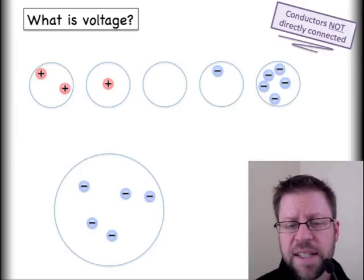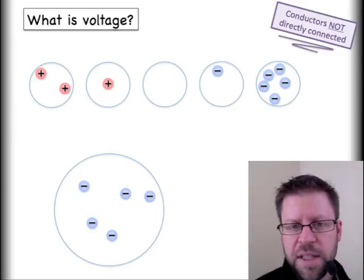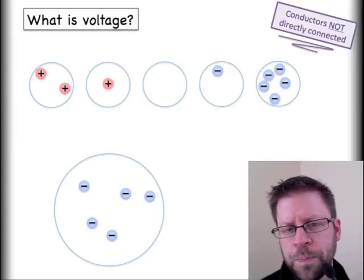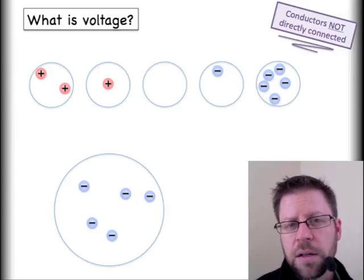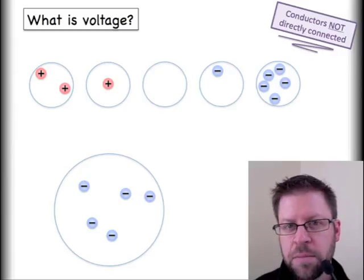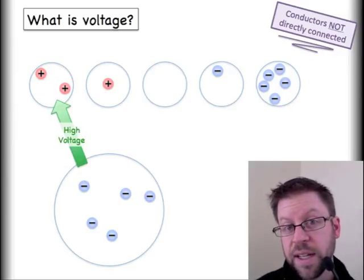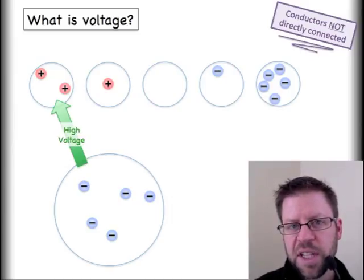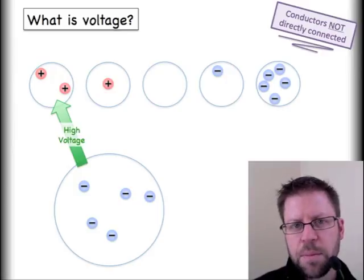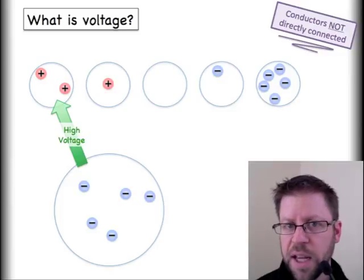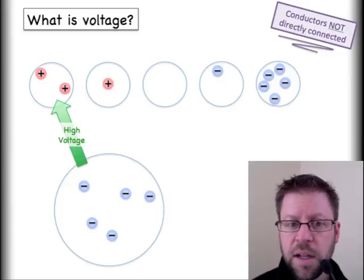This allows me to see what we would call the net charge. So now I know that the big sphere down at the bottom has a net negative charge of five units, the five electrons I'm showing, and then on the top left I have a net positive charge of two. If I start to compare locations, because remember a voltage is a comparison between two locations, I can say that there is a voltage or an electric potential difference between the big sphere and the small sphere.